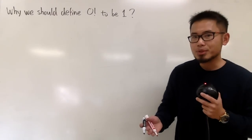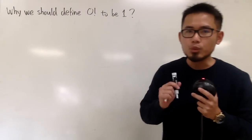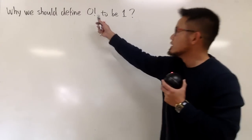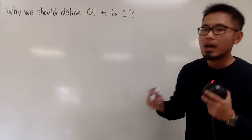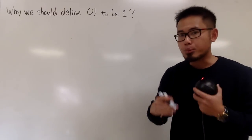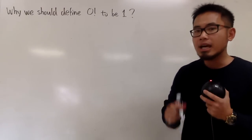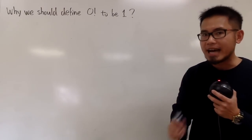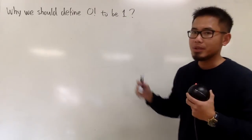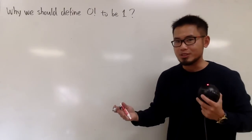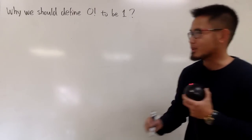In this video, I'm going to give you four reasons on why we should define 0 factorial to be 1. I'm not proving 0 factorial is equal to 1 — I'm saying we should define it to be 1 because of these four situations. So let's take a look.